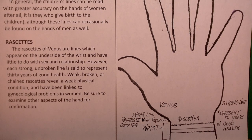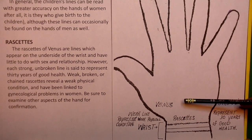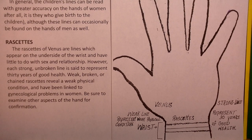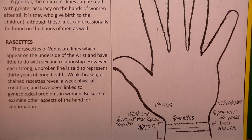Rosettes. The rosettes of Venus — sometimes referred to as belonging to this — appear on the underside of the wrist and have little to do with sex and relationship. So you have to hold your hand up as though the palm is very important, and then you look at those lines. Don't turn your hand over to see them. More accuracy is to be seen on the underside of the wrist. However, each strong, unbroken line is said to represent 30 years of good health.